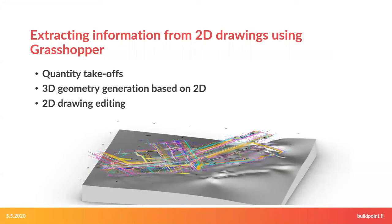Grasshopper is a great tool for extracting information from 2D drawings. It can be used to develop 3D models based on 2D drawings, estimate quantities, or simply automate editing of 2D drawings. Grasshopper supports DWG, DXF, and other file formats for both import and export.